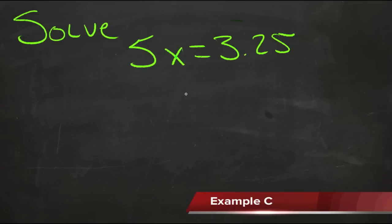To solve this equation for x, we just need to get rid of the 5 over here on the left hand side, since it's the only thing with the x on that side of the equation. Now in this case, we're multiplying x by 5, so the opposite would be to divide.